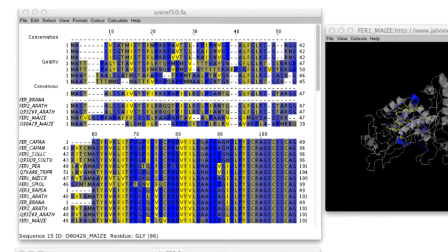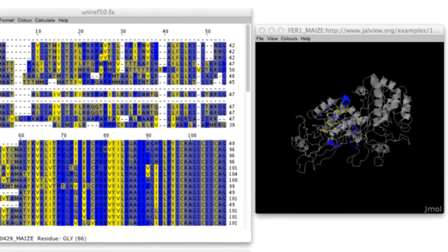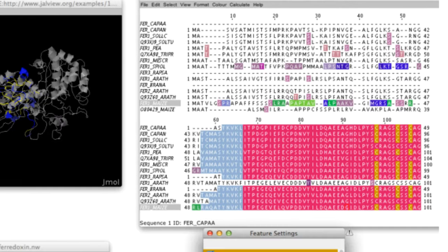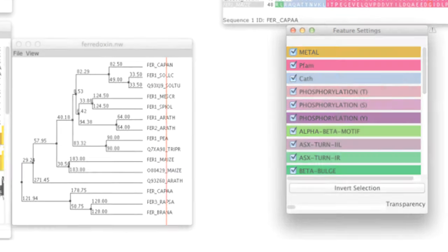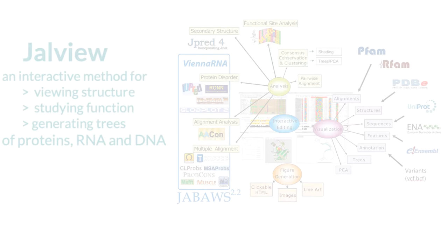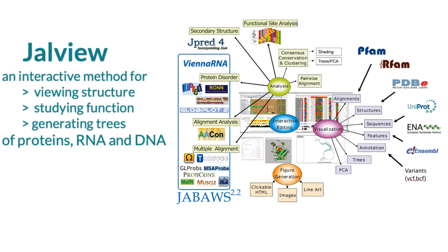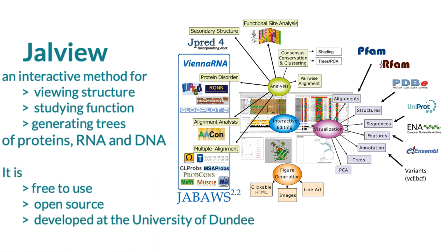All this is integrated into a multiple window interface to display the results. In summary, Jalview is a powerful method for viewing structure, studying function and generating trees of proteins, DNA and RNA. It is completely free to use, and the core development of this open-source multiple sequence alignment program is based at the University of Dundee.